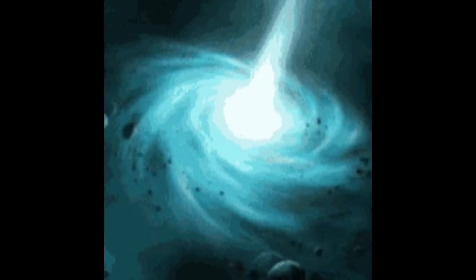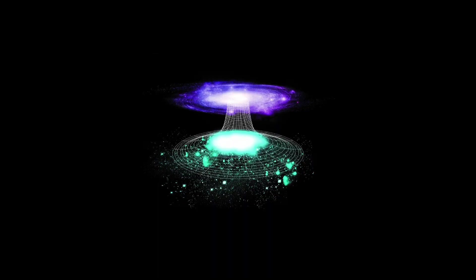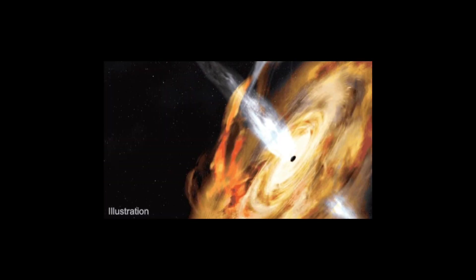In general relativity, a white hole is a hypothetical region of space-time and singularity that cannot be entered from the outside, although energy, matter, light and information can escape from it. Essentially, it is opposite from a black hole, which energy, matter, light and information cannot escape.